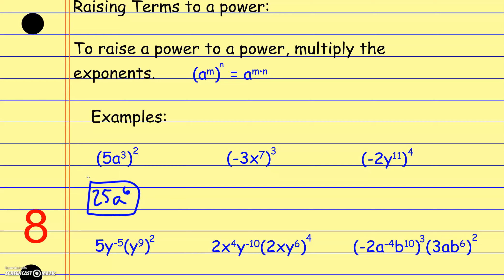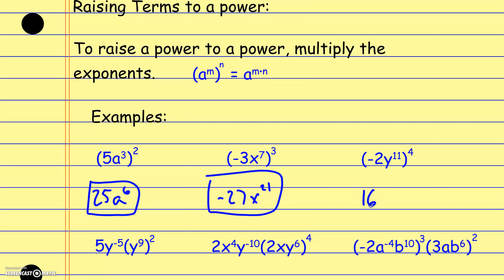For negative 3x to the seventh, all raised to the third: negative 3 to the third is negative 27, and multiplying exponents gives x to the 21st. Numbers still react the same way. Here we have negative 2 and y to the 11th — negative 2 to the fourth power is positive 16, and multiplying the exponents gives y to the 44th power.